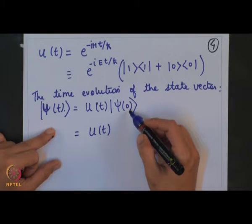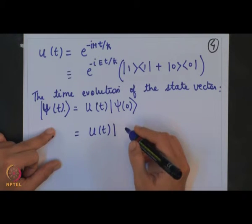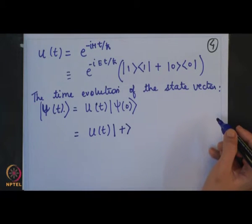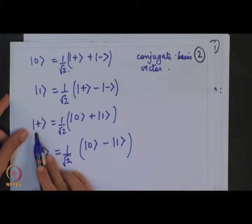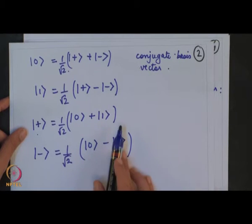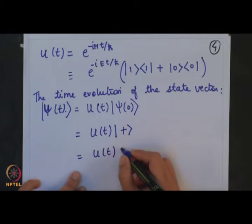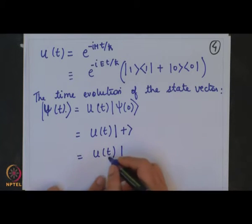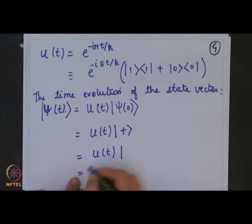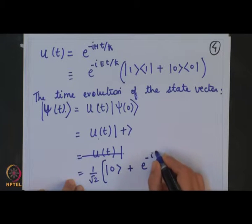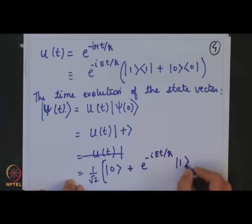When time t=0, remember the state is ket-plus, and we have seen that in terms of the conjugate basis, ket-plus equals (|0⟩ + |1⟩)/√2. So U(t) operating on this state can be written in terms of |0⟩ and |1⟩.